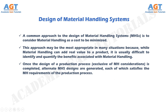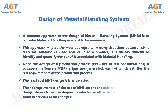Once the design of a production process, exclusive of material handling considerations, is completed, alternate material handling system designs are generated, each of which satisfies the material handling requirements of the production process. The least cost material handling system design is then selected. The appropriateness of the use of material handling system cost as the sole criterion to select a material handling system.